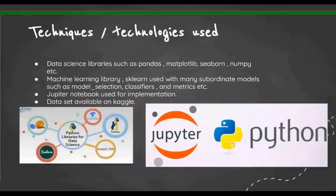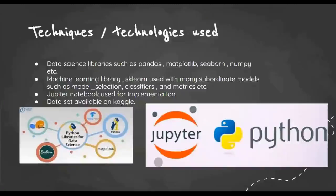The techniques or technologies used: I've used data science libraries such as pandas, matplotlib, seaborn, and numpy. Basically seaborn is used for 3D visualization, pandas is used for data processing, matplotlib is used for visualization as well, and numpy is used to process on arrays. Machine learning libraries I've used: sklearn, which has many subordinate models, many classification models and model selection matrix. I've implemented this all in Jupyter Notebook and the data which I'm working on was available on Kaggle.